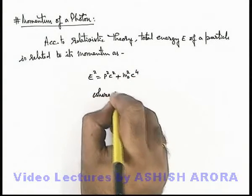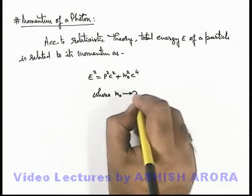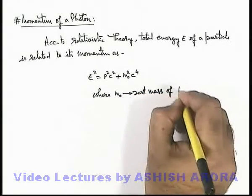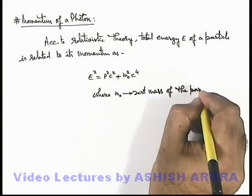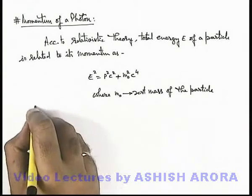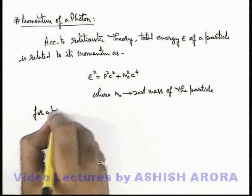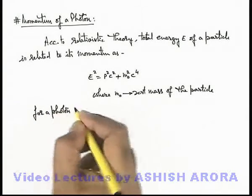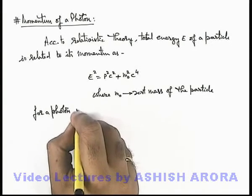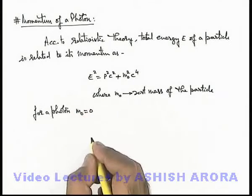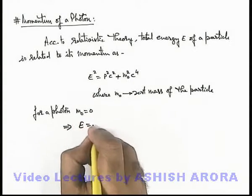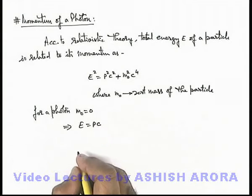For which we are relating these parameters. And if we talk for a photon, we know that a photon is a particle of electromagnetic radiation. We can say its rest mass is equal to zero. This implies this relation says for a photon its energy can be related as pc.